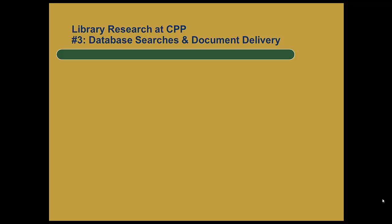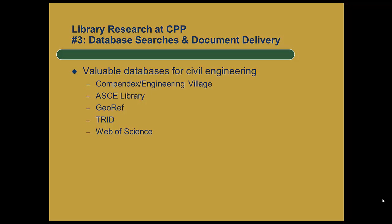There are a number of organizations that catalog both journal papers and papers from conferences and put that information in databases, which makes it easy for you to search and find articles from a number of different locations. Those are the databases we are going to be looking at today. There are a whole bunch of these databases, and here are some of the ones that are most valuable for civil engineering.